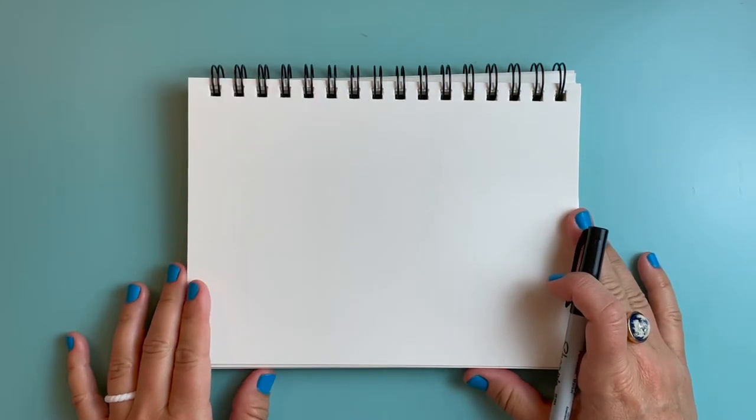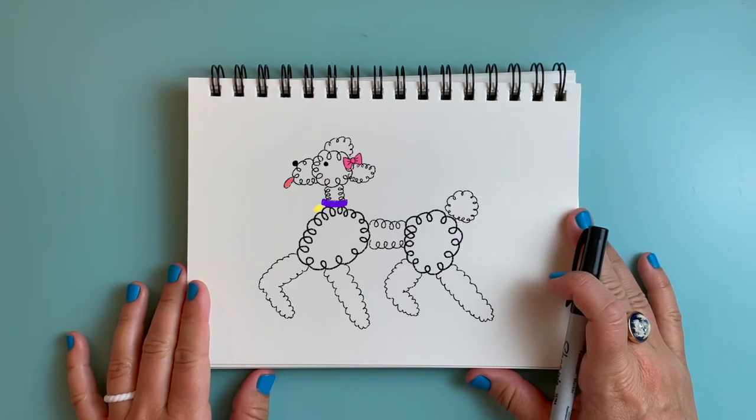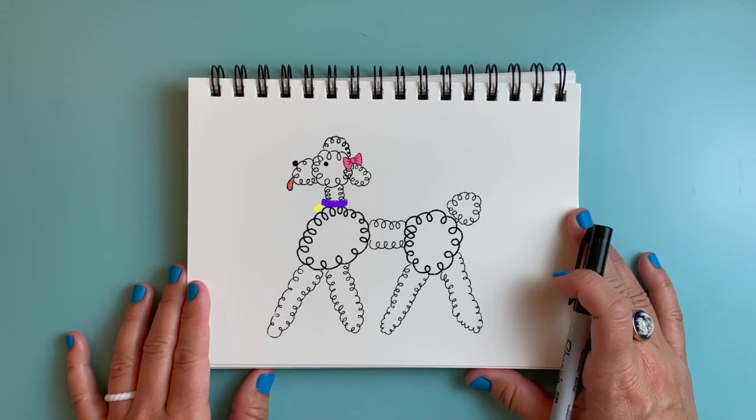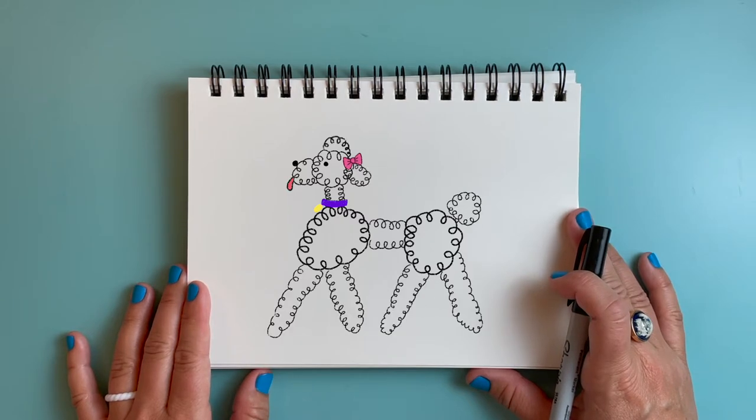Hi friends! Today we are going to make a circle doodle curly poodle. We're going to be making this cute little friendly poodle dog using curly lines.